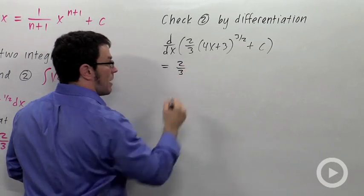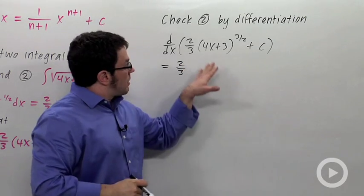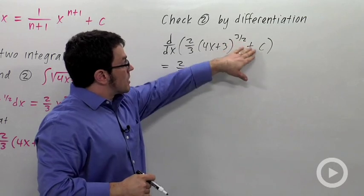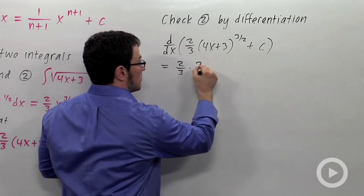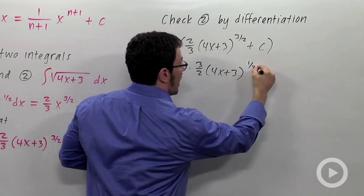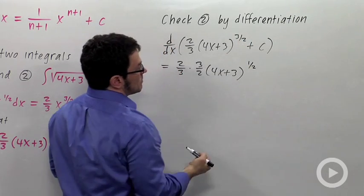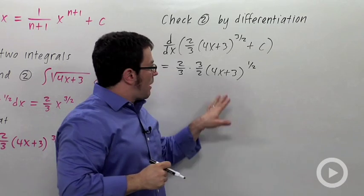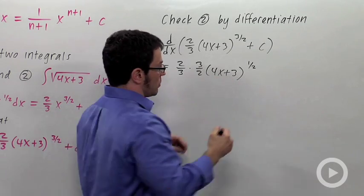Okay, the 2 thirds will come out in front. And then 4x plus 3 to the 3 halves, the 3 halves will come out. And I have 4x plus 3 to the 1 half, right? This power minus 1. But I still have to multiply by 4, the derivative of the inside part. I have to use the chain rule.